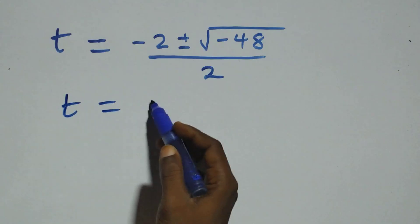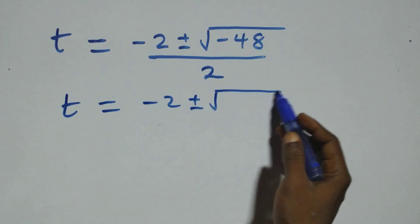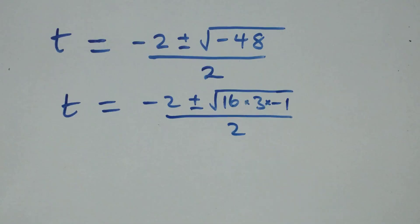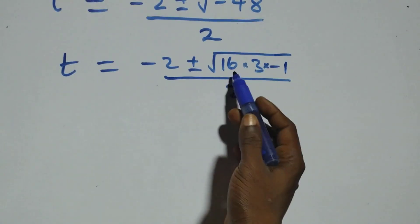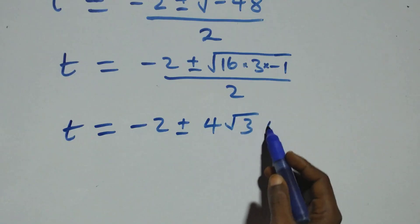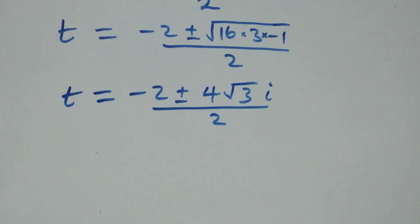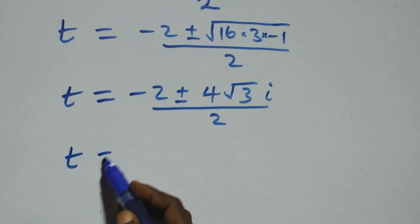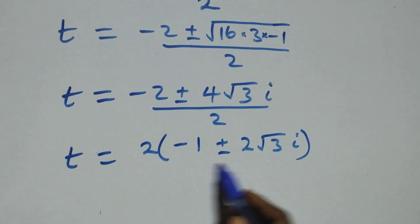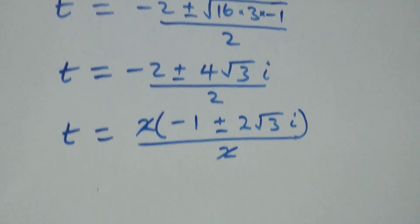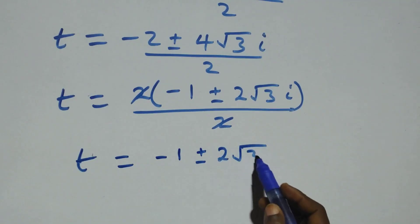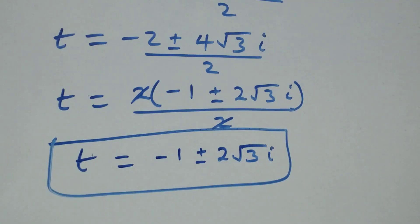We write −48 as 16 × 3 × (−1). Taking √16 = 4 out: t = (−2 ± 4√3·i) / 2. Factoring 2 from the numerator: t = 2(−1 ± 2√3·i) / 2. The 2s cancel, giving t = −1 ± 2√3·i. So again two complex solutions.